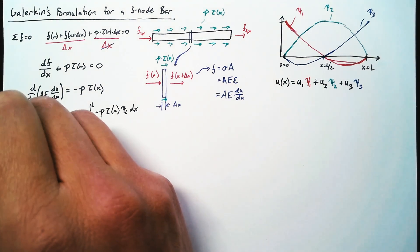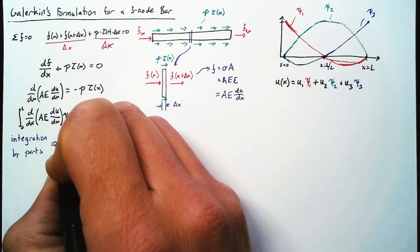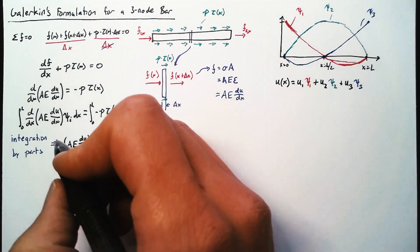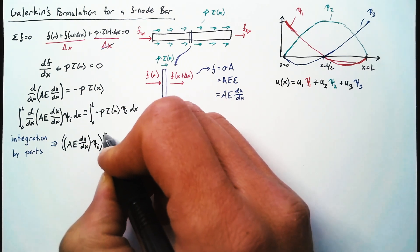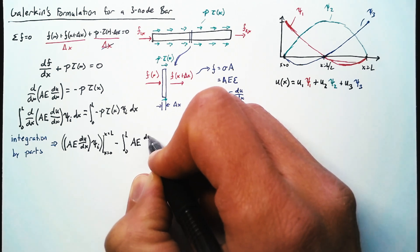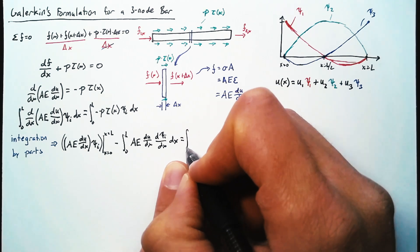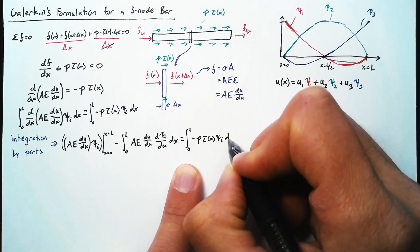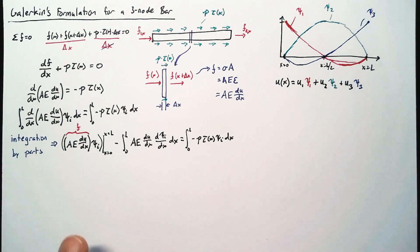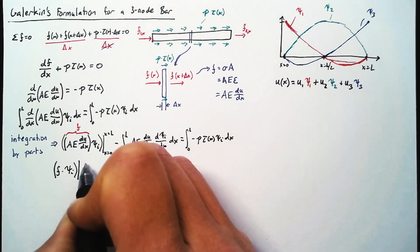The next step is integration by parts — I'm going to skip the ugly calculus and go straight to the answer. What we end up with is the term AE · du/dx multiplied by our shape function ψᵢ, evaluated from x = 0 to x = L, minus the integral from 0 to L of AE · du/dx multiplied by dψᵢ/dx, integrated with respect to x, equal to the right-hand side integral. This chunk evaluated at the endpoints is exactly our force, so we simplify it as F·ψᵢ evaluated at those two endpoints, and pull the shear force integral to the left-hand side so all forces are together.